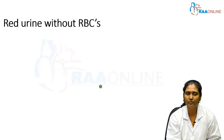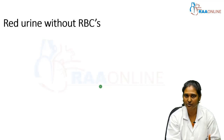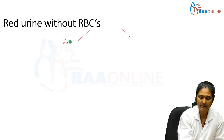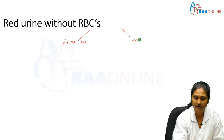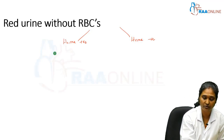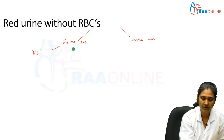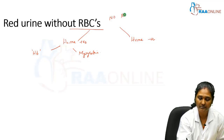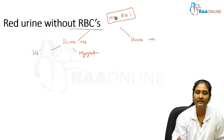Moving on to another entity called red urine without RBCs — the color of the urine is red due to some other constituents, but there are no RBCs present. This condition is divided into two categories: heme positive and heme negative, depending on the presence of pigment — either hemoglobin or myoglobin — but note that there are no RBCs in the urine.